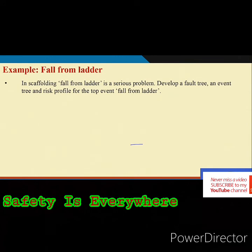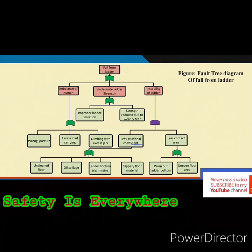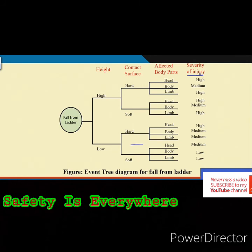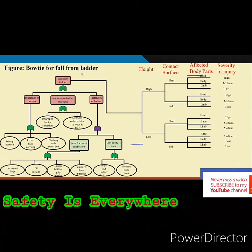Many times we give the example of a fall from a ladder. The fault tree covers why a fall from a ladder takes place, and then depending on conditions — from which height, what is the contact surface — the consequences differ, primarily related to injury severity. This means that you do not necessarily use bow tie only for high-technology situations. This example shows that bow tie can also be applied to manual or semi-mechanized kinds of jobs. When you combine the fault tree and event tree together, this is nothing but the bow tie for a fall from a ladder.